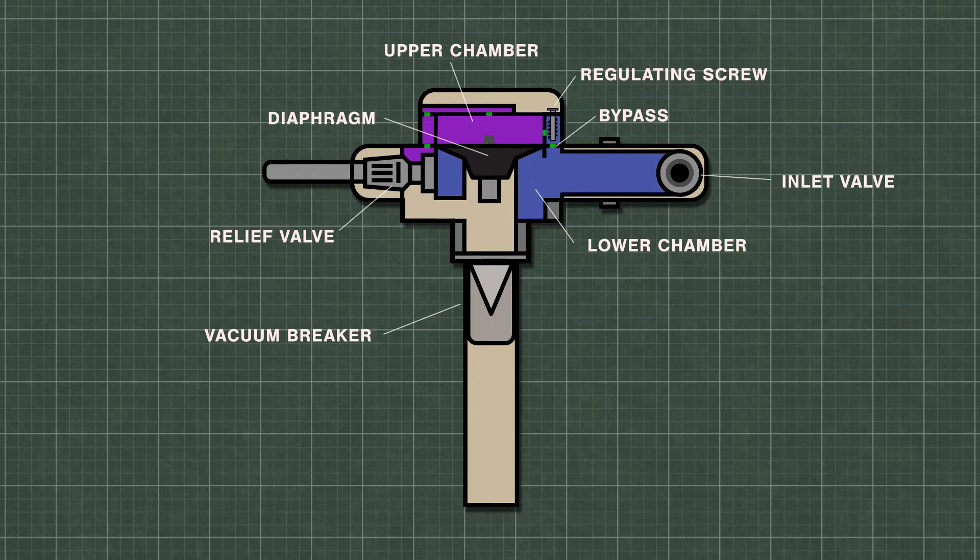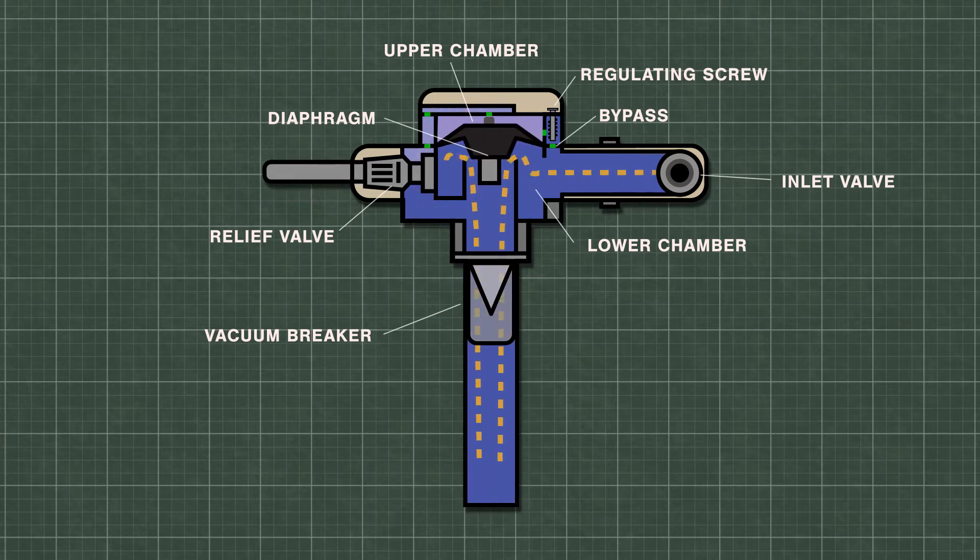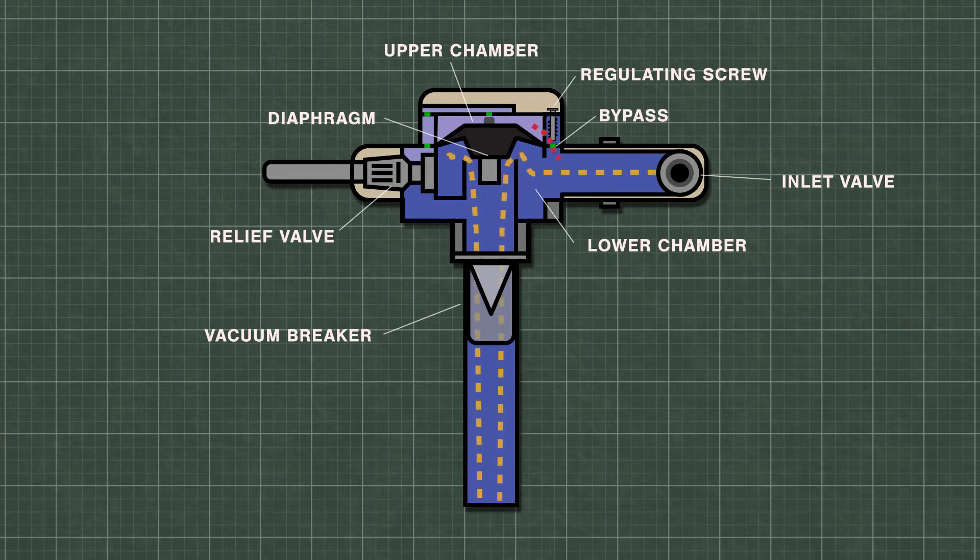When the handle is pressed, the relief valve opens and releases the water from the upper chamber. This creates a vacuum which lifts the diaphragm up from the valve seat. The water from the inlet then travels down the flush pipe.